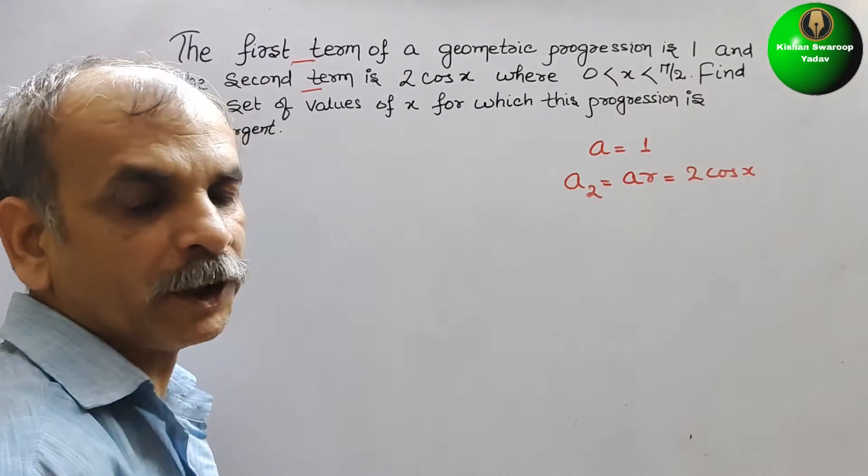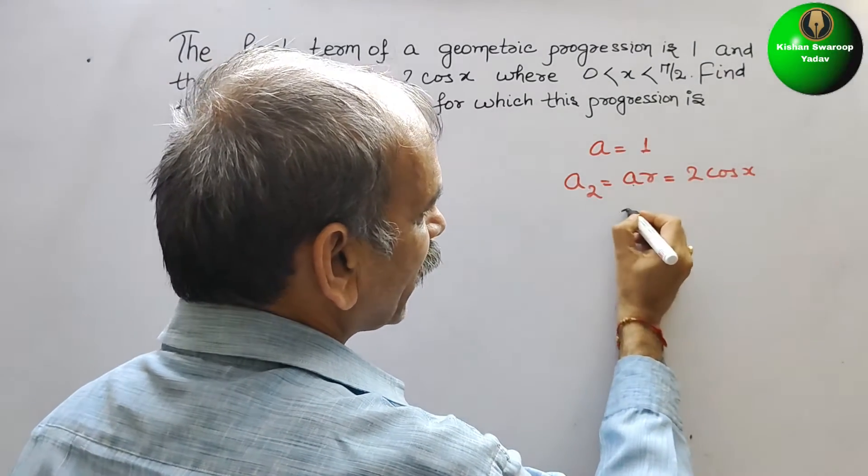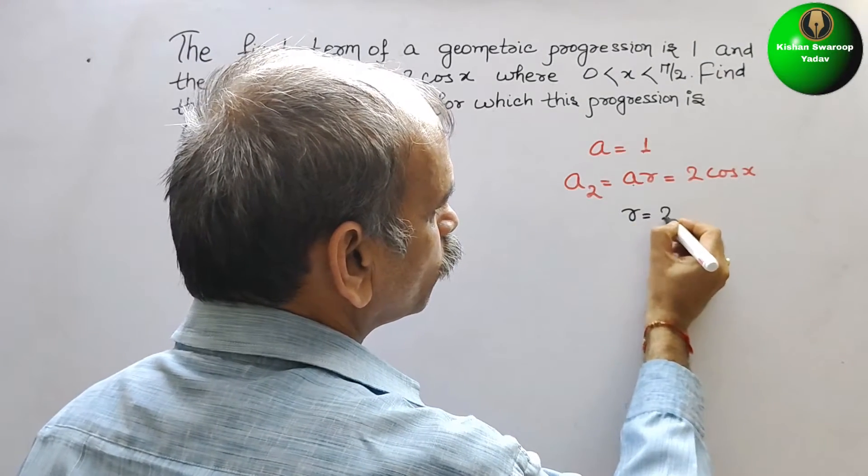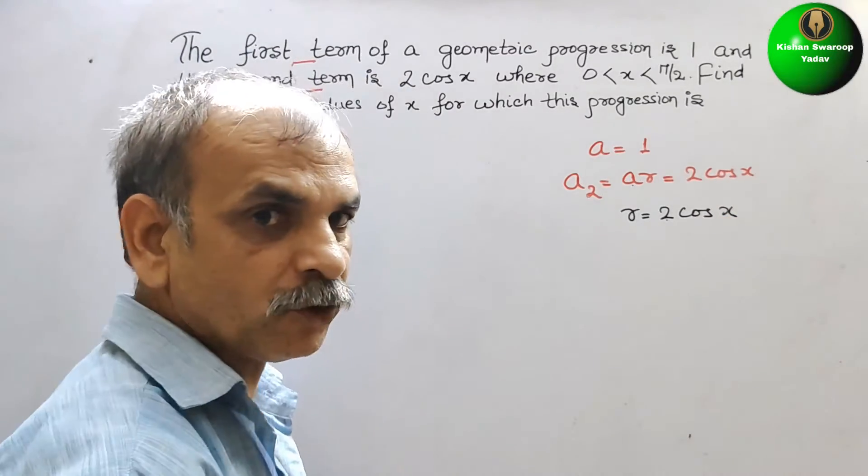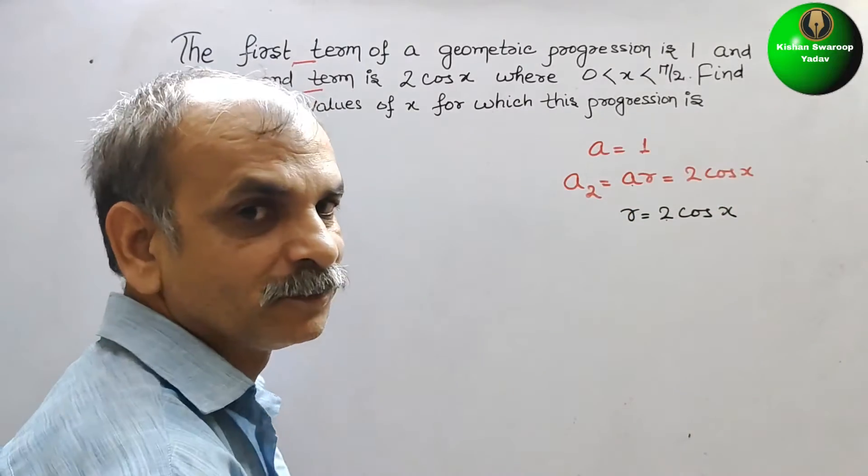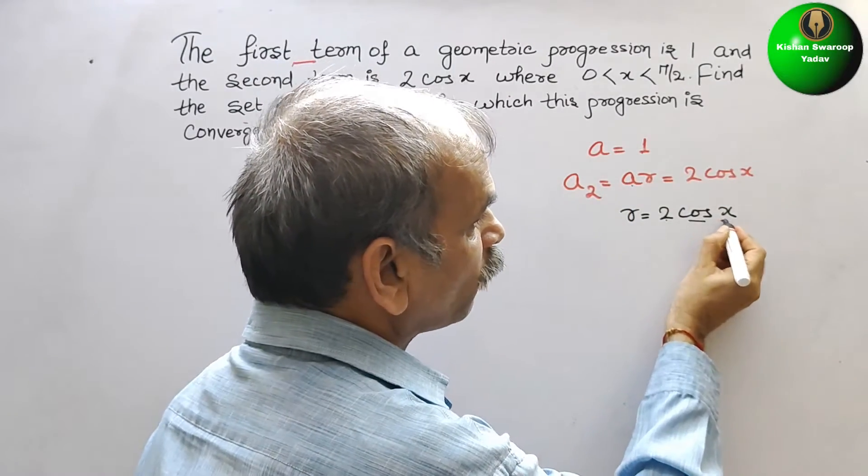Now, substitute the value of a. If you substitute the value here as 1, you will get r is equal to 2 cos x. Now, if you see this, this is your r.